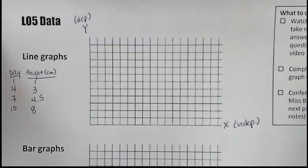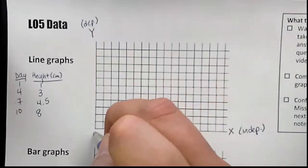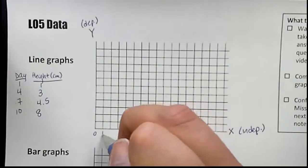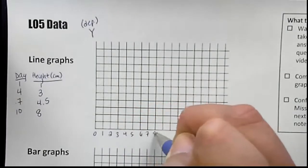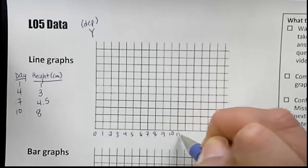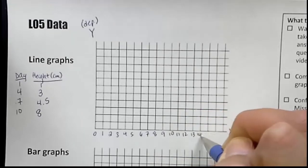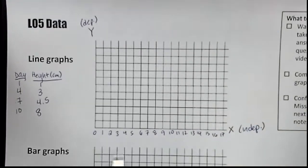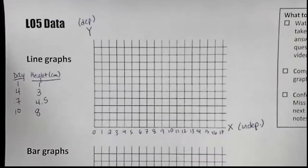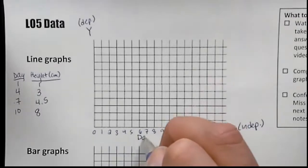So by days. I'm going to start numbering by ones. There should be 17 boxes. Even though we only went up to day 10, I still want you to fill this out all the way. We need to label our x-axis. So what does this represent? It represents the day.